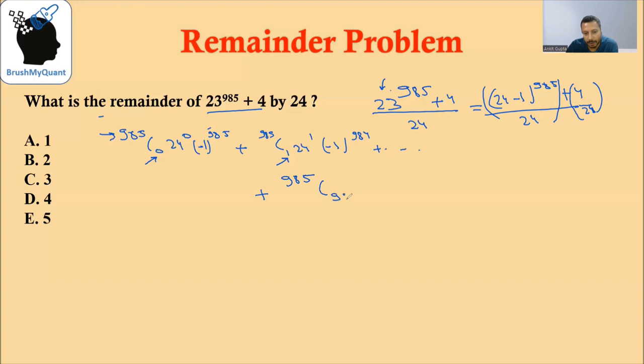The last term will be 985 C985, 24 raised to 985, and minus 1 raised to 0.